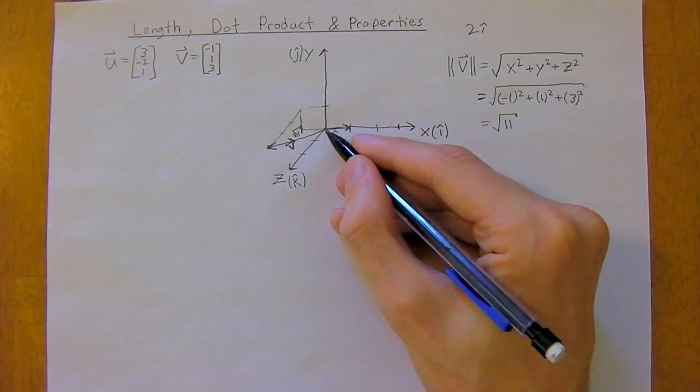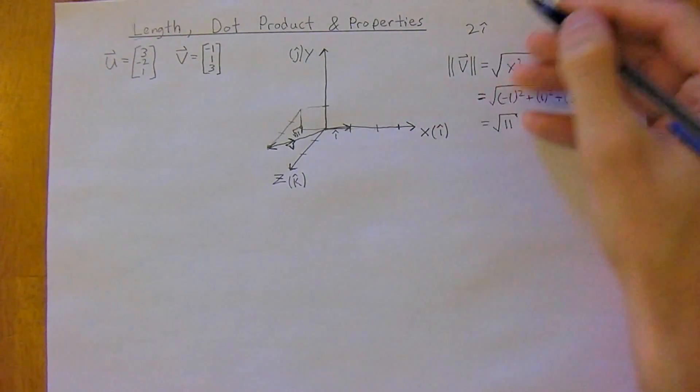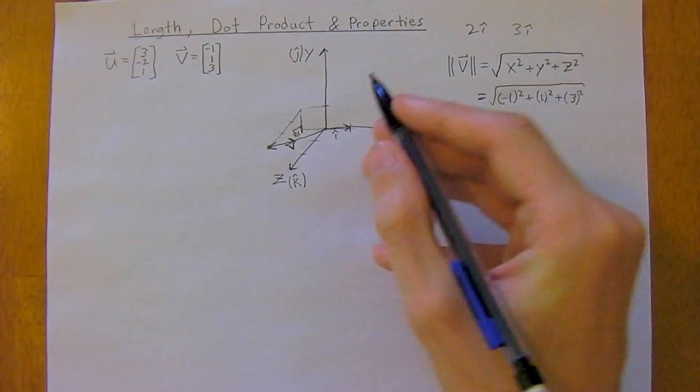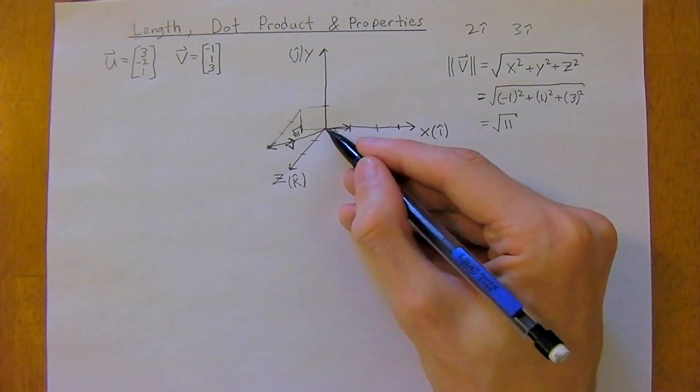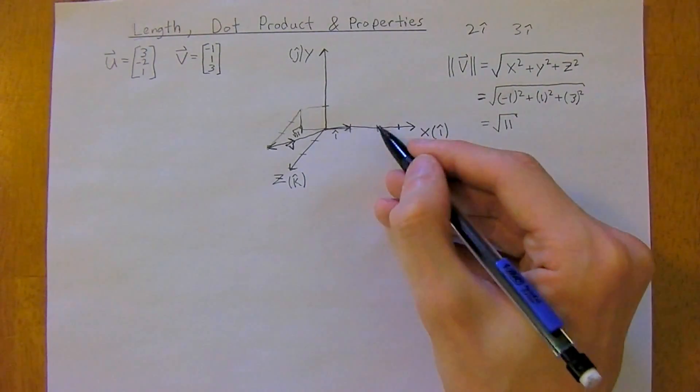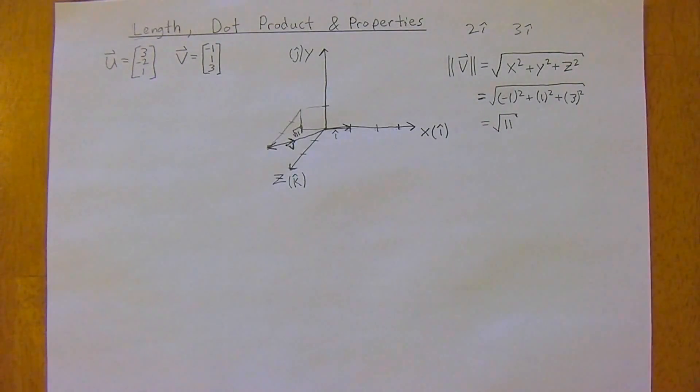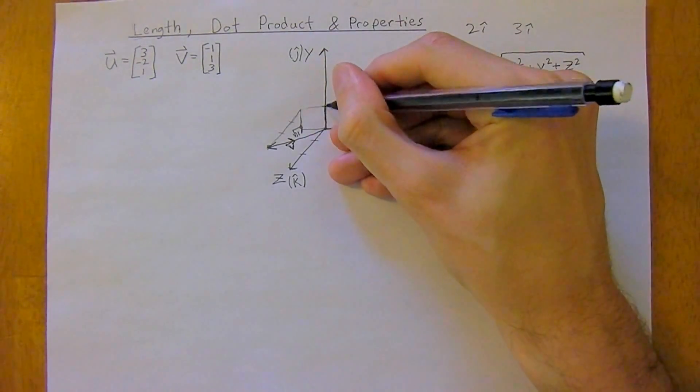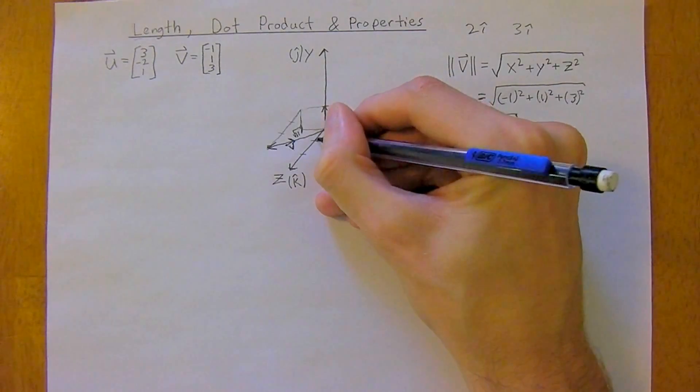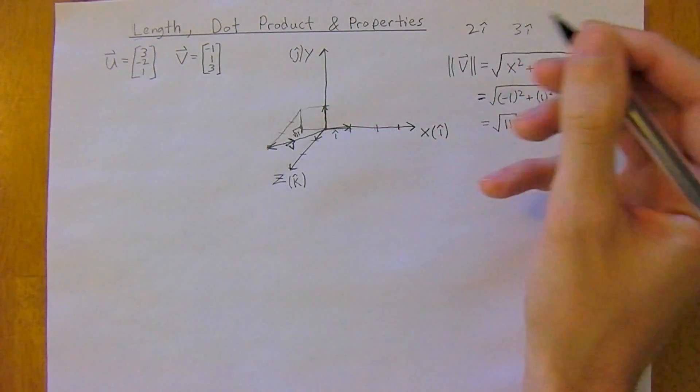So it just means a length of 1 in the direction of the x-axis. So if you had 2i-hat, you'd just multiply 2 times this vector, and it would take you out here. If you had 3i-hat, you'd multiply 3 times your vector i-hat here, and it would take you out here. And so j-hat means is this vector, and k-hat is this vector right here.